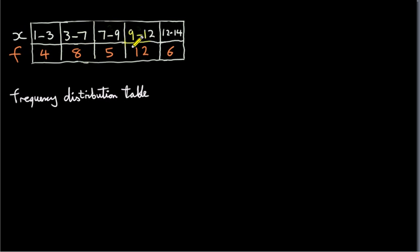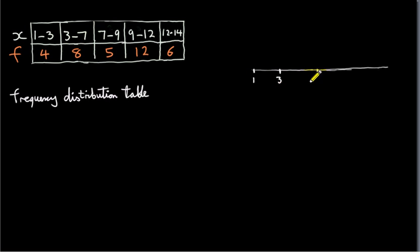We want to construct a histogram from this frequency distribution table. The x values lie on the horizontal axis. The first interval is 1 to 3. The second interval, 3 to 7, is twice as long, with a width of 4. Our x values run from x equals 1 to 14. We construct rectangles on each interval to represent the frequency of each interval. For the first interval 1 to 3, we have a frequency of 4, meaning we construct a rectangle on this interval with an area of 4.